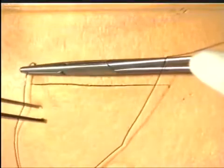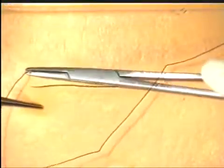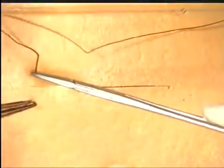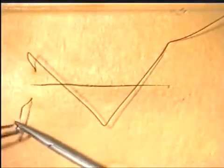Mattress sutures can be inserted to allow for eversion or inversion. They can also be used for irregular skin edges. We will demonstrate here a vertical mattress suture.